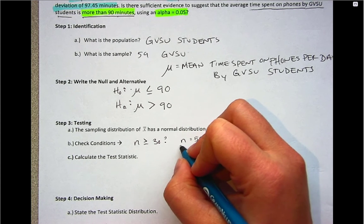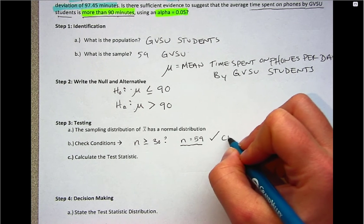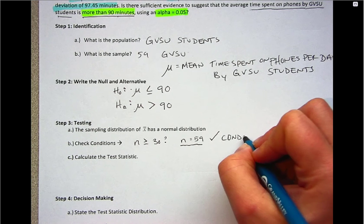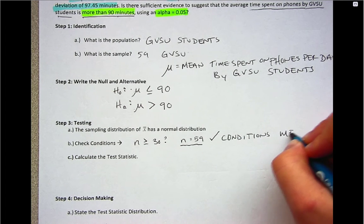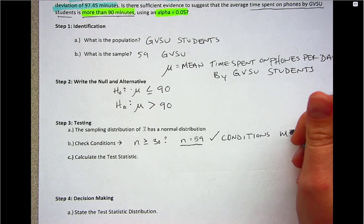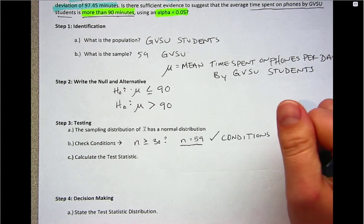So with an n of 59, that's greater than 30. So we're going to say our conditions are met. But remember, it's valuable for you to also check what your data looks like. And if there are any extreme outliers, make sure that you have a large enough sample size that can withstand this.